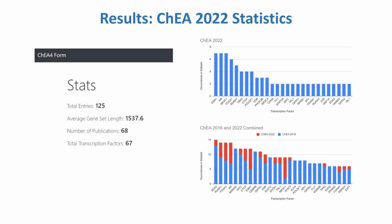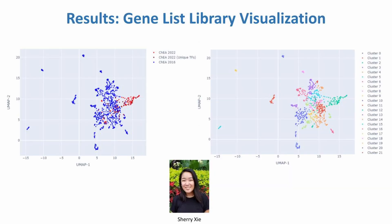Gene sets for 67 different transcription factors were curated, with an average gene set length of 1,538 genes. The number of occurrences for the top 28 transcription factors in the new CHIA library are visualized in the top right histogram. Specific emphasis was placed on finding entries for NR3C1 for the DEX benchmarking project. The transcription factor occurrences for the top 28 transcription factors in CHIA 2016, combined with the new data that I curated, is visualized in the stacked histogram on the bottom right corner. To visualize the new CHIA 2022 entries with the CHIA 2016 library, entries from both databases were graphed as a UMAP plot. I would like to give credit to ShareACF for writing the code used to create the UMAP plots.